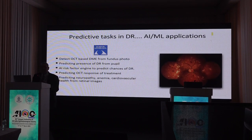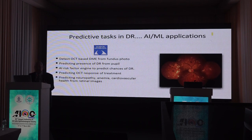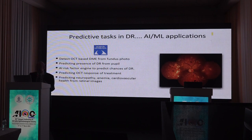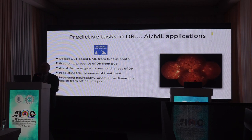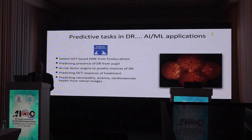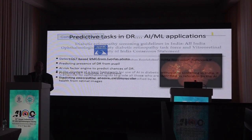Besides that, more and more work is happening on predictive tasks in diabetic retinopathy — detecting OCT-based DME from a retinal image, or using other tools to identify diabetic retinopathy, creating a risk factor engine which can predict the chances of developing DR, OCT response to treatment, and more recently, systemic diseases like neuropathy, anemia, and cardiovascular health from retinal images. People are working on these predictive tasks using AI.